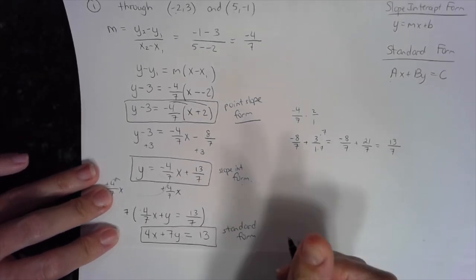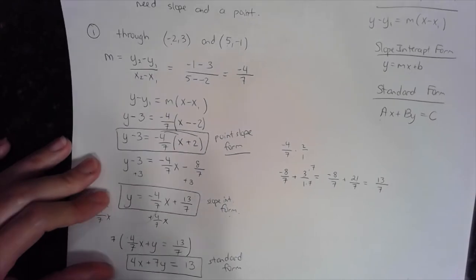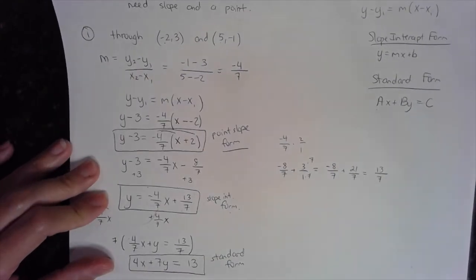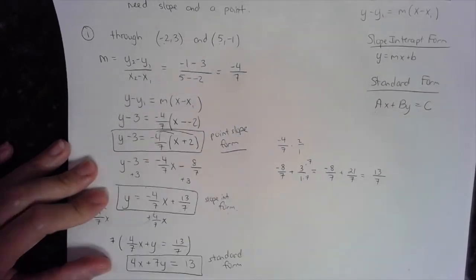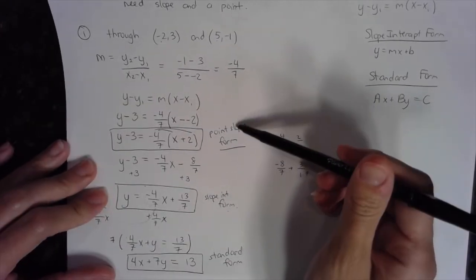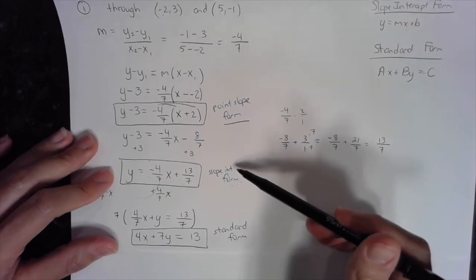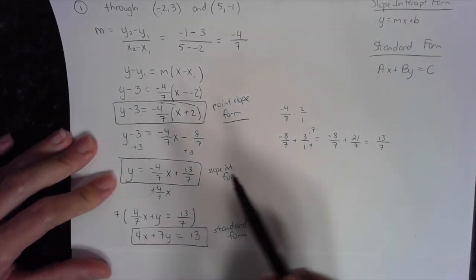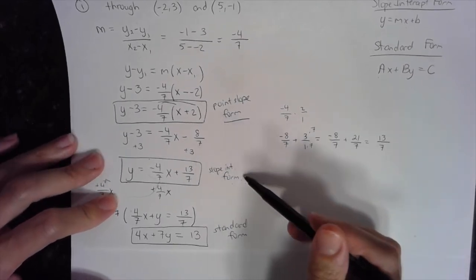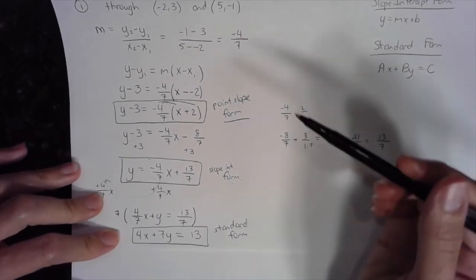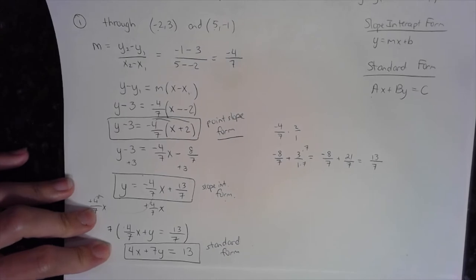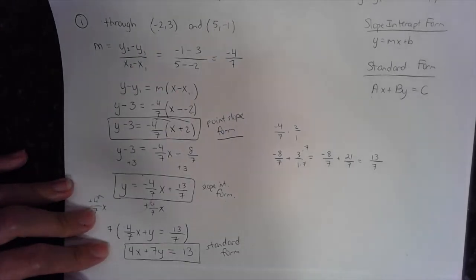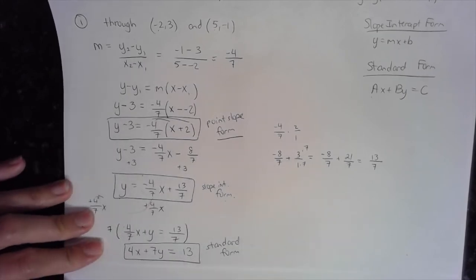These are three different representations of the same equation — all going through those two points: point-slope form first, then manipulated into slope-intercept form by isolating y, then into standard form. More than likely you'll be asked for slope-intercept or standard form at the end of the day. Let's look at example two.